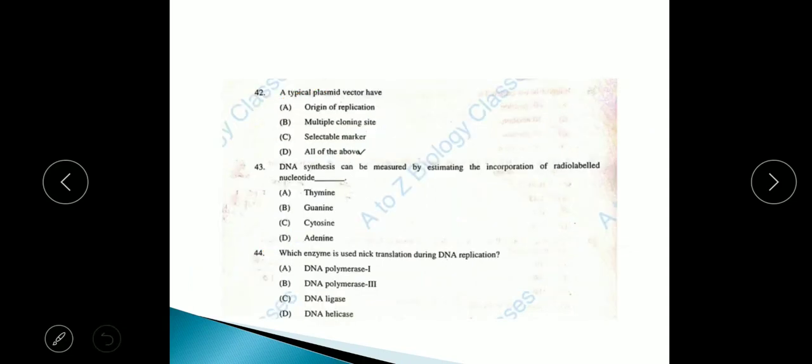Question 42: A typical plasmid vector has origin of replication, multiple cloning site, selectable marker. The answer is D, all of the above. Question 43: DNA synthesis can be measured by estimating the incorporation of radiolabeled nucleotide. Answer will be option A, thiamine.